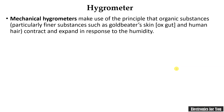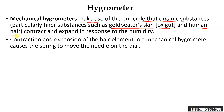Hygrometers are basically classified into mechanical hygrometers. They work on the principle that organic substances like ox gut or human hair can contract and expand according to humidity. This contraction and expansion is used for the movement of a needle in a dial, and therefore we can measure humidity using such a hygrometer. These are called mechanical hygrometers.